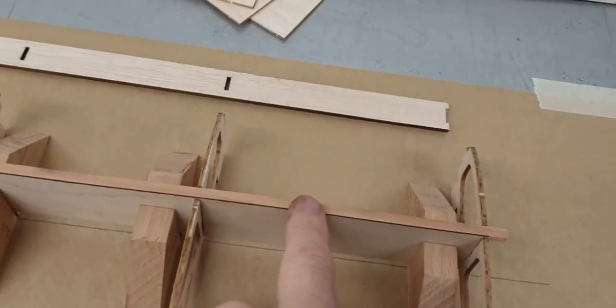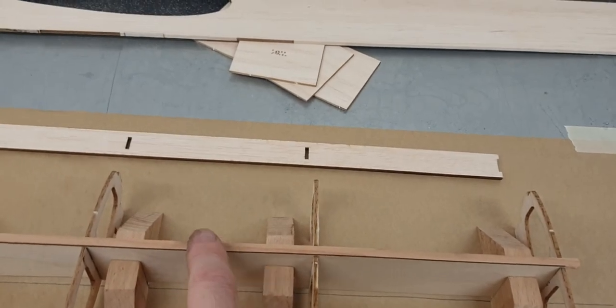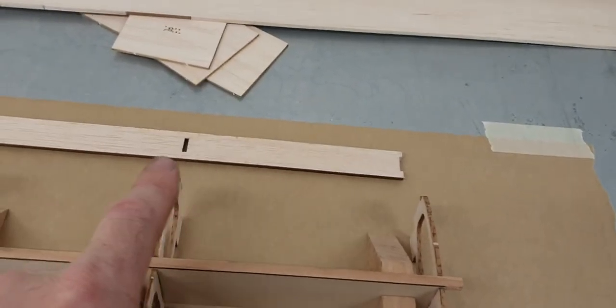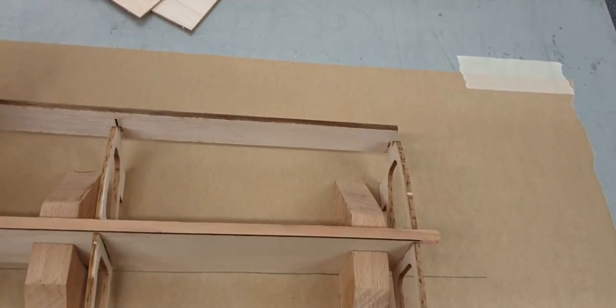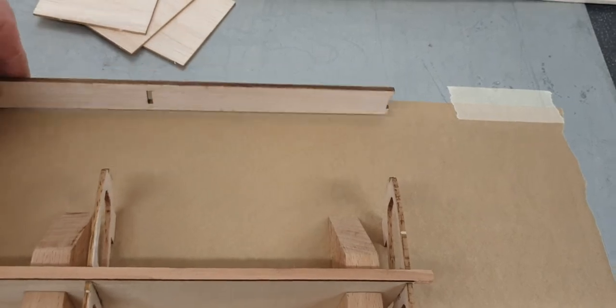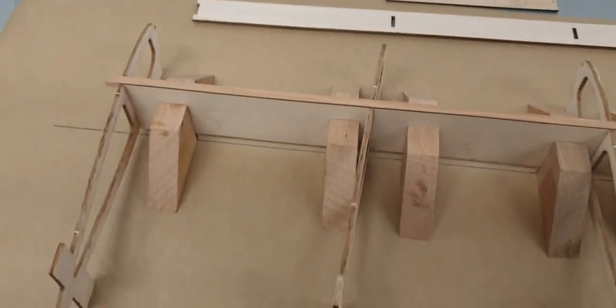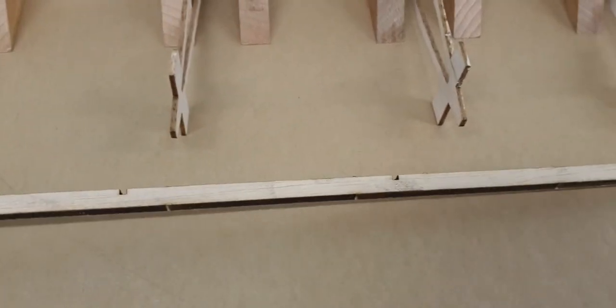So the next stage is to glue the main spar into position onto this web, and then I will attach the leading edge which just basically slots onto the front onto these tabs. That will square all the ribs up and I'll glue that into position. And then I'll do the same with the trailing edge. With this, it's all been laser cut out.